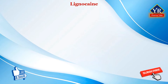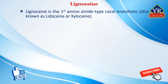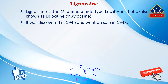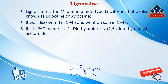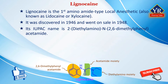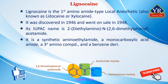The first drug of this lesson is lignocaine. Lignocaine is the first aminoamide type local anesthetic. It was discovered in 1946 and went on sale in 1948. Its IUPAC name is 2-diethylamino N-2,6-dimethylphenylacetamide. It is the monocarboxylic acid amide resulting from the formal condensation of N,N-diethylglycine with 2,6-dimethylaniline. It is a synthetic aminoethylamide, a monocarboxylic acid amide, a tertiary amino compound, and a member of benzenes.